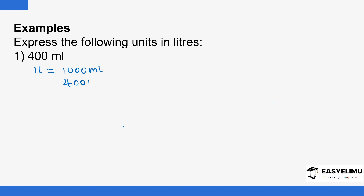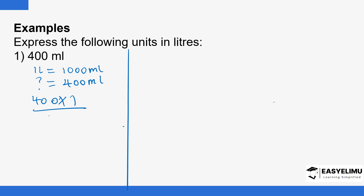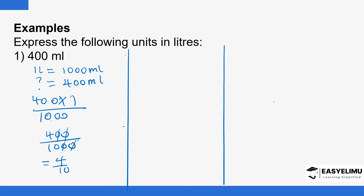What about 400 milliliters? How many liters will they be? You do cross multiplication: 400 multiplied by one, then divide by one thousand. 400 by one is just 400, then you divide by one thousand. The zeros cancel out, and you have four over ten. The decimal point moves to the left one step, giving us 0.4 liters.